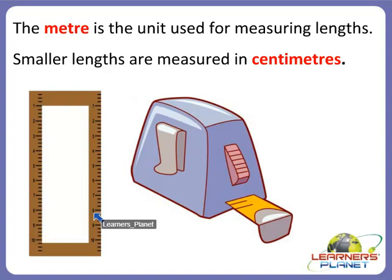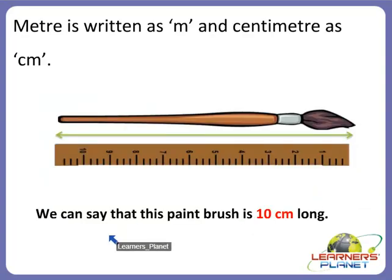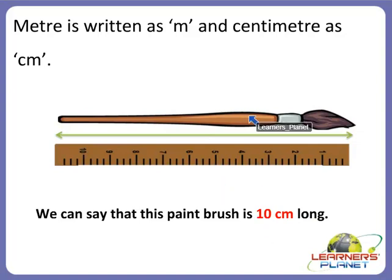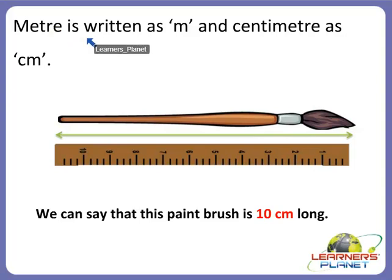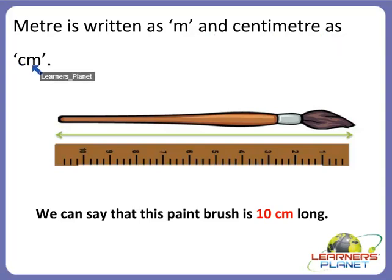Smaller lengths are measured in centimeters, but bigger lengths are measured in meters. If something is longer than 15 or 20 centimeters, or much longer, we measure it in meters. Meter is written as small 'm' and centimeter is written as small 'cm'. Always remember these units.